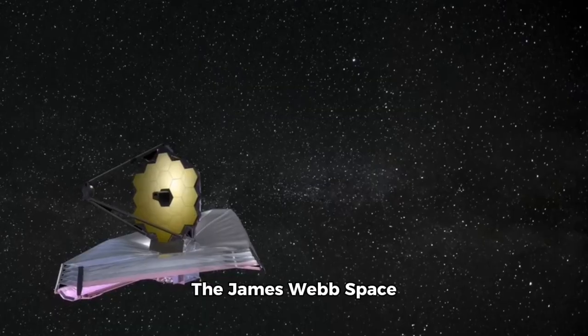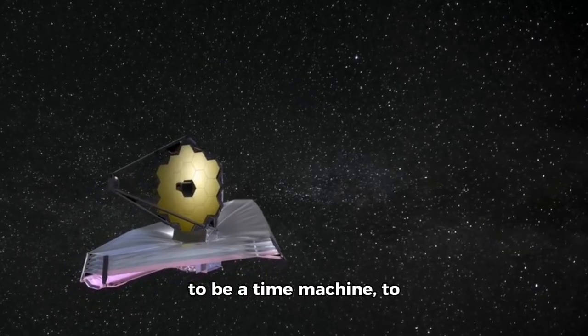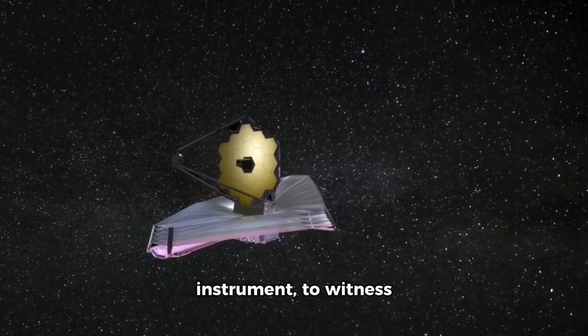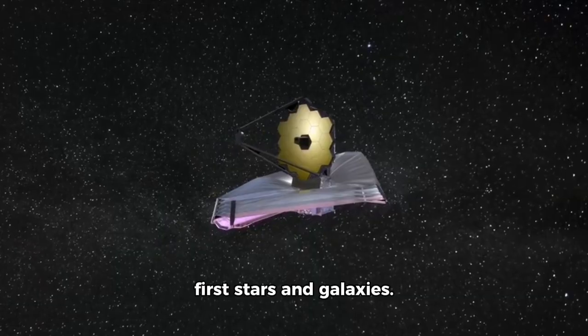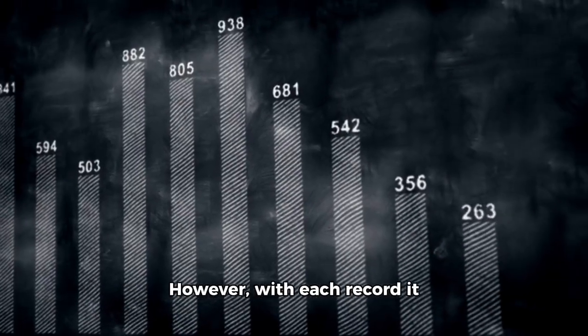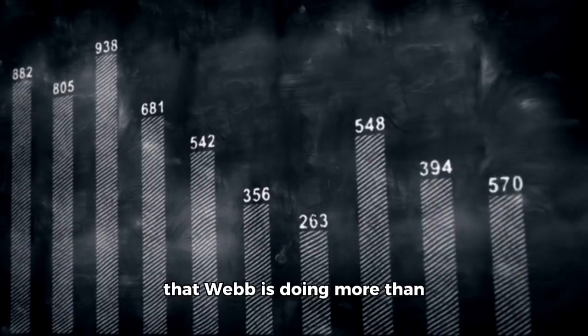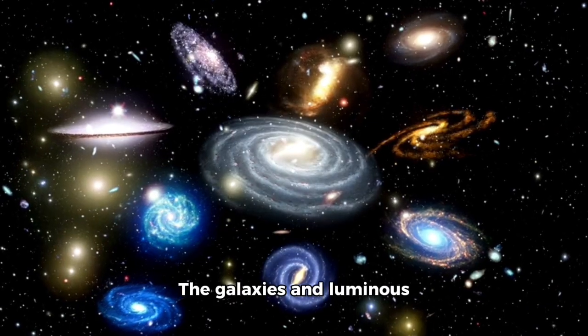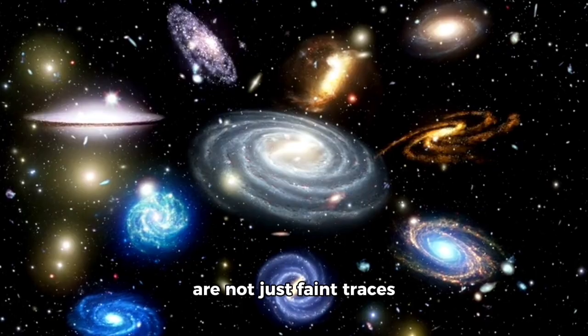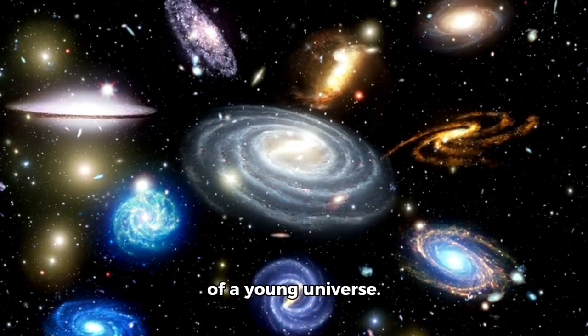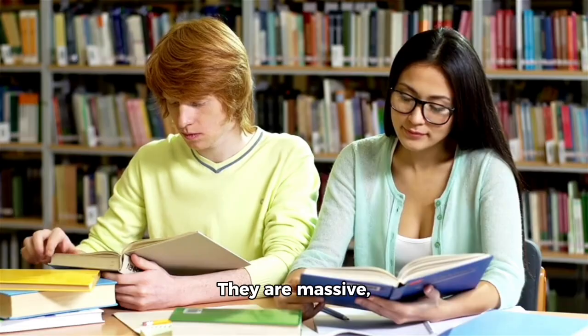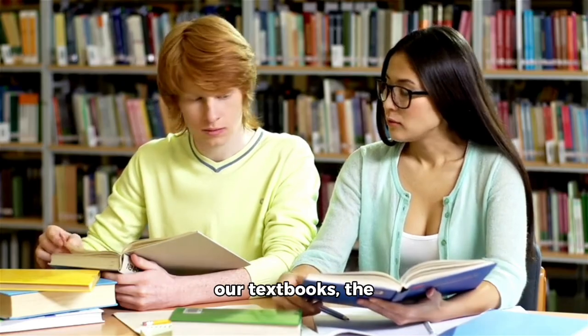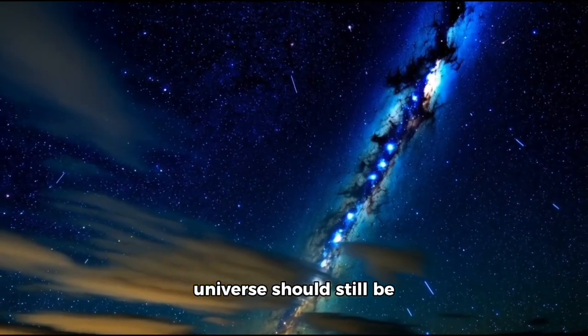The James Webb Space Telescope was constructed to be a time machine, to look deeper into the past than any previous instrument, to witness the formation of the first stars and galaxies. However, with each record it breaks, it's becoming clear that Webb is doing more than just studying the past, it's modifying it. The galaxies and luminous objects it's uncovering are not just faint traces of a young universe. They are massive, bright, and impossible to miss, existing at a time when, according to our textbooks, the universe should still be in its early stages.